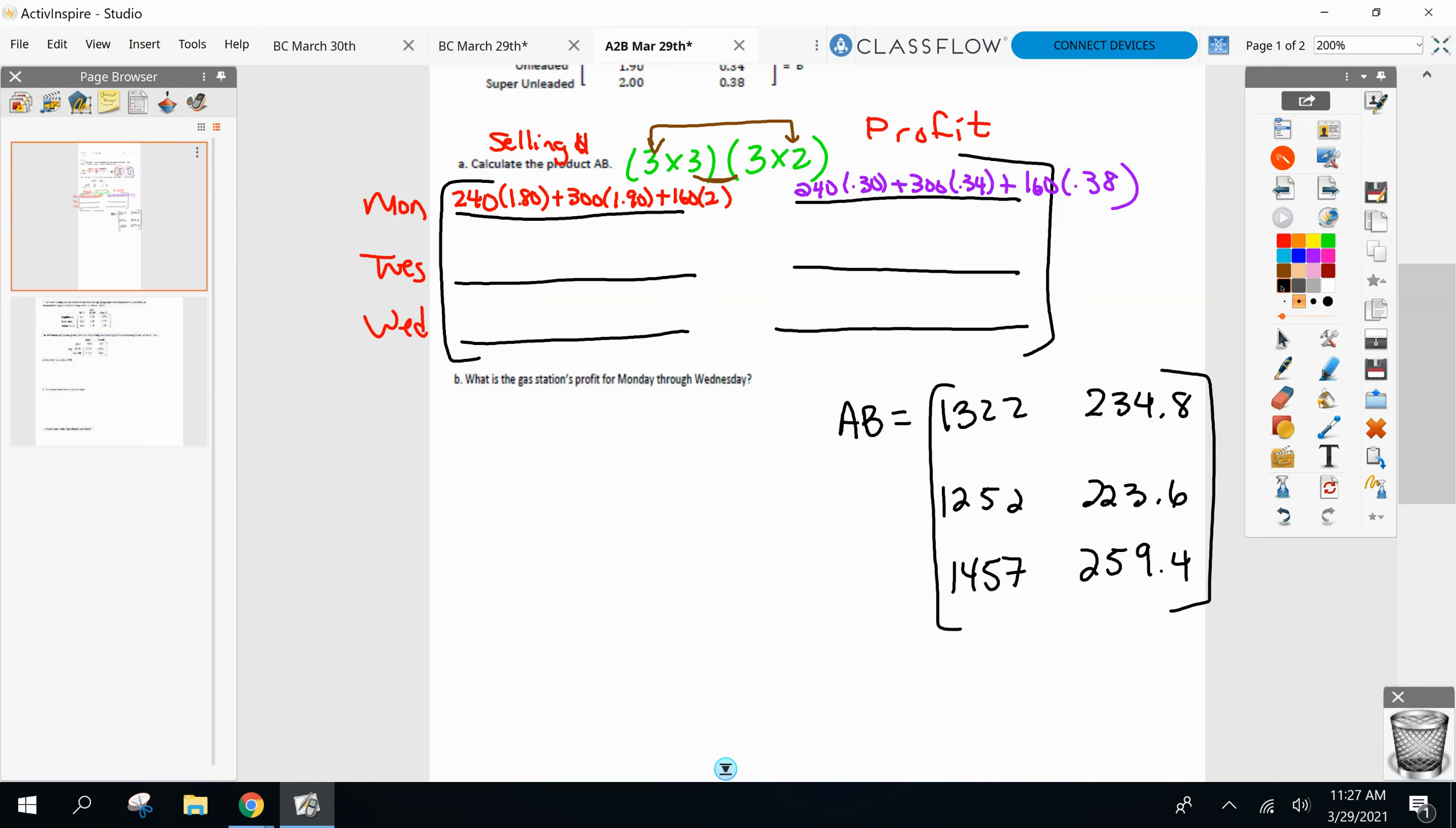Okay, what's the gas station's profit Monday through Wednesday? So this is why it's important to know what your rows and columns mean. Remember, column one in matrix B was selling price. Column two was the profit. Okay, so this is what we want here. We want column two, and it says Monday through Wednesday. So everything in column two added up. Everything in column two added up, because remember, the days of the week are over here on your rows, Monday, Tuesday, and Wednesday. So your profit, 234.8 plus 223.6 plus 259.4. So our profit, and it is money, remember, so make sure you add a zero at the end of your number there, $717.80 for profit.